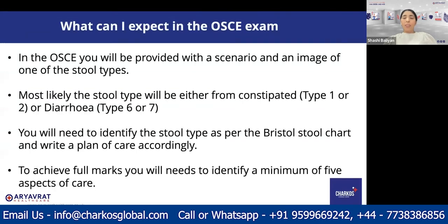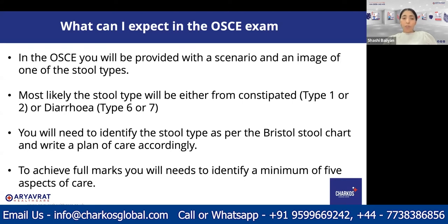In the OSCE exam, you will be provided with a scenario and an image of one of the stool types. Most likely the stool types will be either constipated, which is type 1 or type 2, or diarrhea, which can be type 6 or type 7. You will need to identify the stool type as per the Bristol Stool Chart and write a plan of care accordingly. In order to achieve full marks, you will need to identify a minimum of five aspects of care.